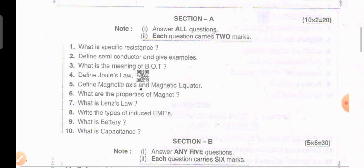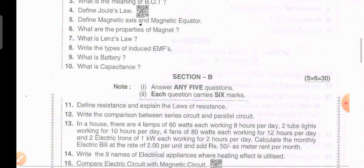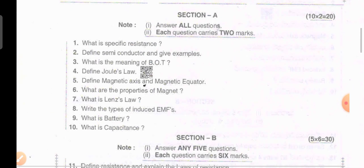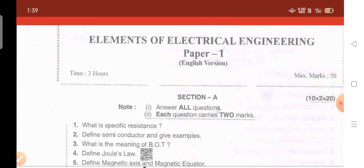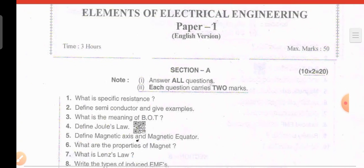This is Section A questions. What is specific resistance? Define semiconductor and give examples. What is the meaning of BOT? Sometimes they may ask you to expand it. Define Joule's law. Define magnetic axis and magnetic equator. What are the properties of the magnet? What is Lenz's law? Write the types of induced EMFs — sometimes they may ask you to expand EMFs. What is a battery? What is capacitance? These are some important questions in Elements of Electrical Engineering for Electrical Technician first year students in AP.